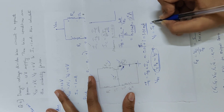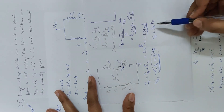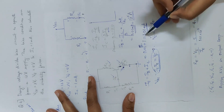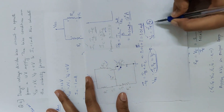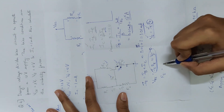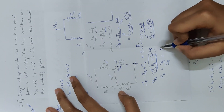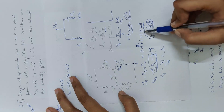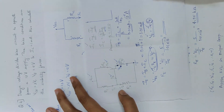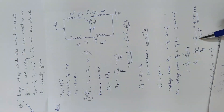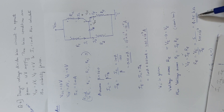VE is equal to IE times RE. Therefore RE equals VE divided by IE. VE is 5V and IE is 1.01 mA (1.01 into 10 raised to minus 3). So RE equals 5 divided by 1.01 into 10 raised to minus 3, which gives 4.95 kOhm.